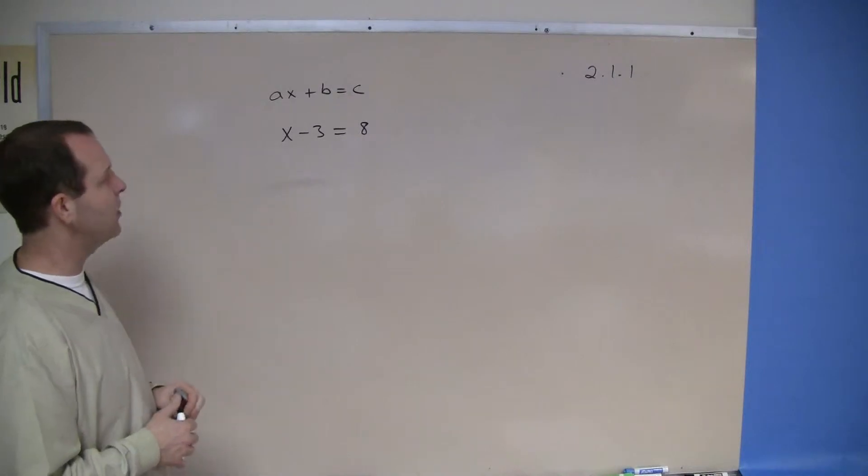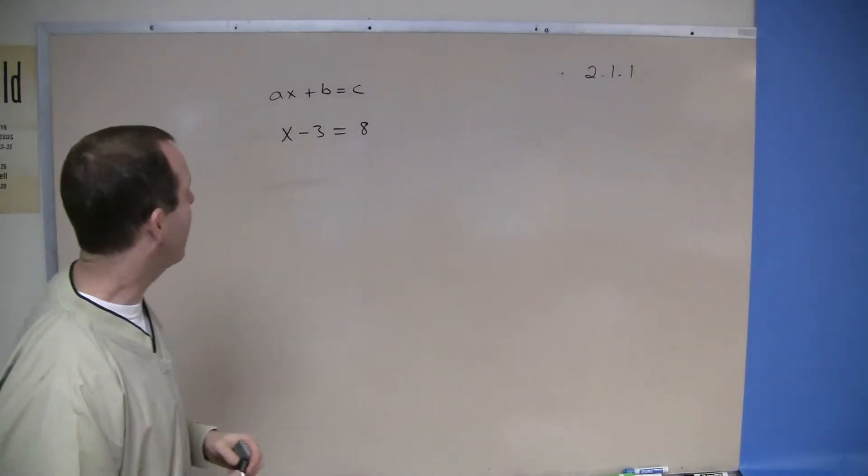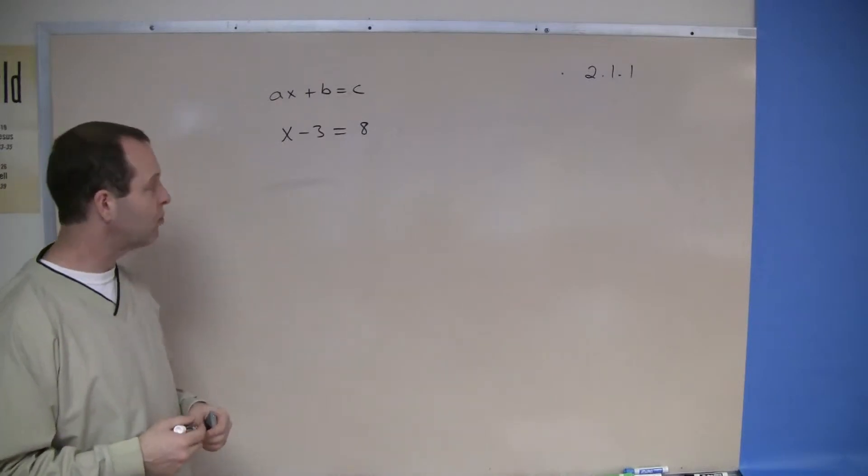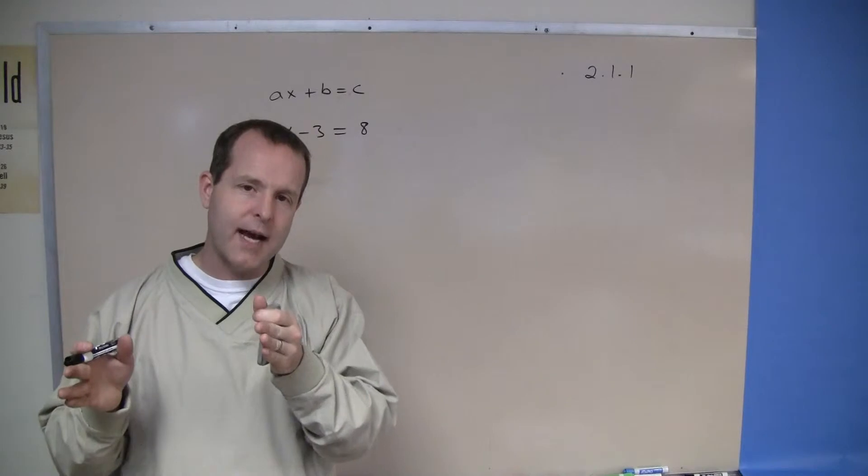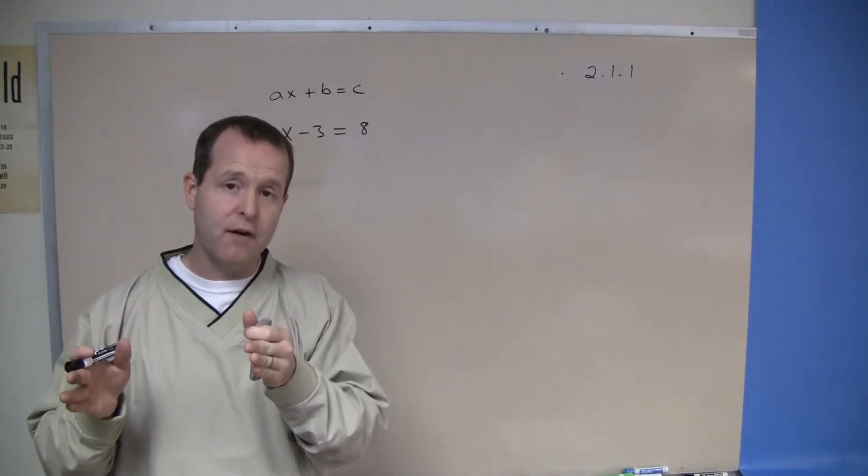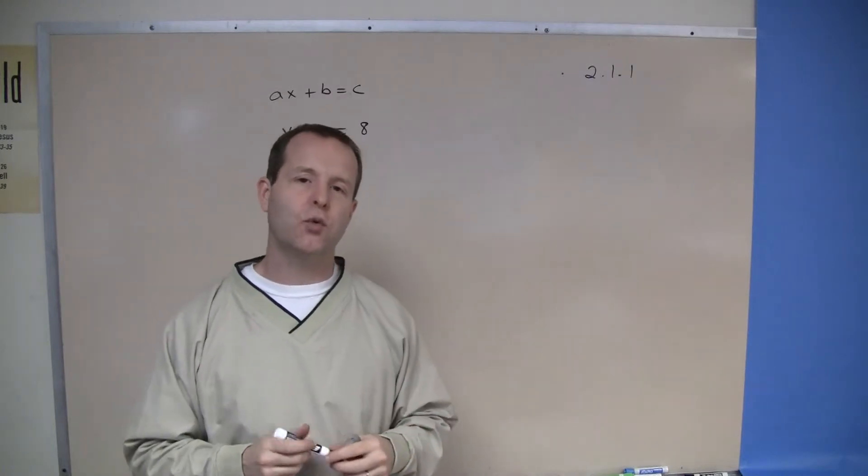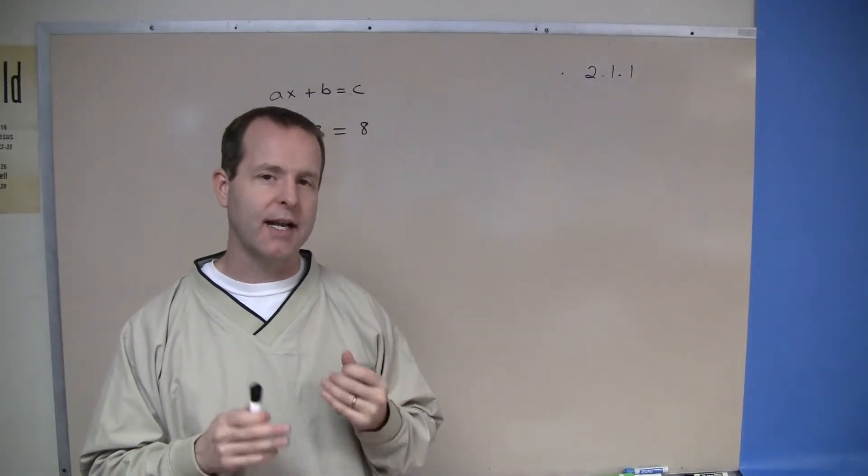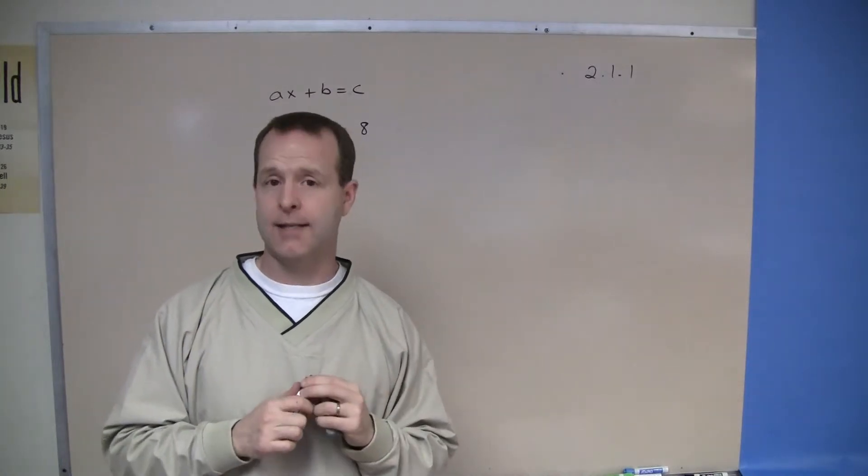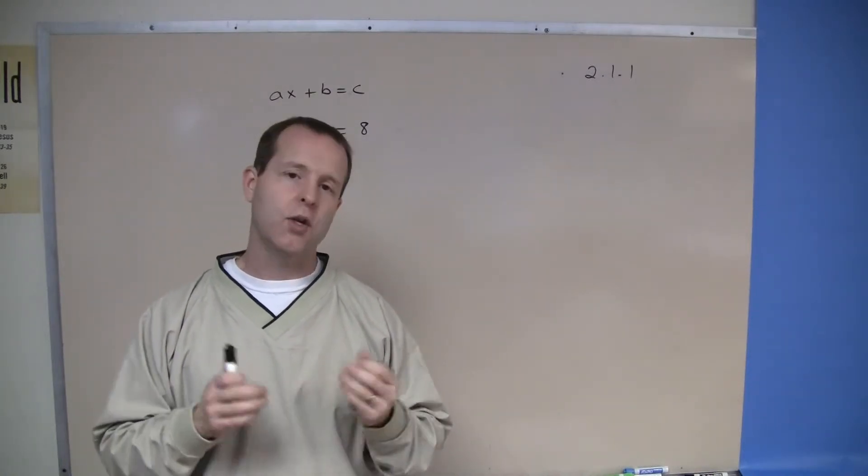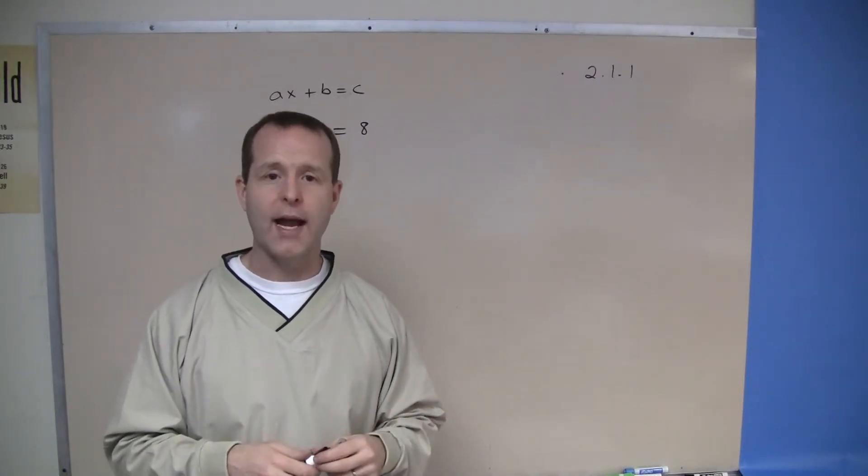So how do I solve X minus 3 equals 8? There's a property of addition we can use. The addition property of equality is basically saying whatever I do to one side of the equal sign is fine as long as I do it to the other side. Your first strategy in solving equations that include variables is to get the variable by itself. Look at where the variable's at and find out if there's anything else nearby that's in the way.